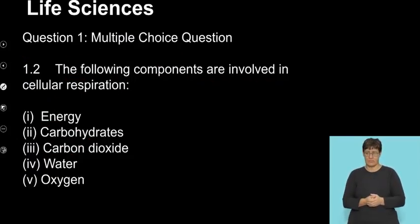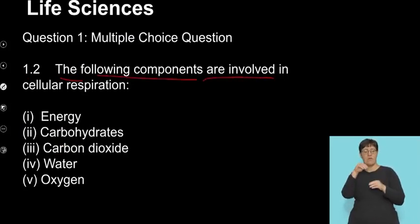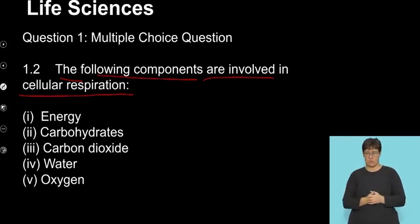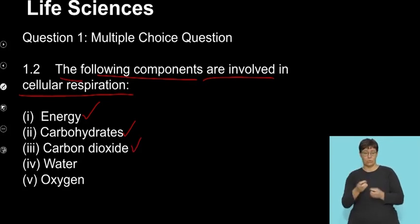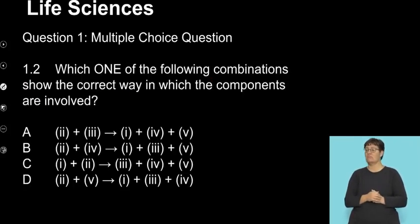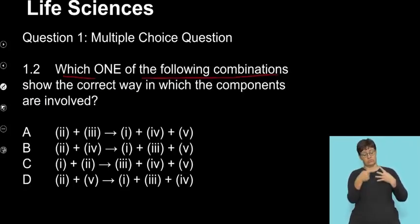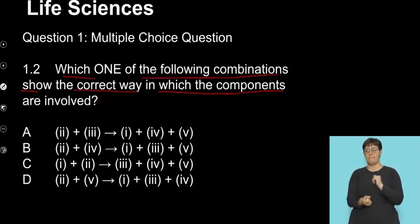Let's look at the next question. The following components are involved in cellular respiration, and we know that energy is the product. Carbohydrates are needed as the reactant. We know that carbon dioxide is a waste product. Water is needed as well as oxygen. So we're looking at various different components involved in this process. Let's read the question further. Which one of the following combinations show the correct way in which these components are involved?